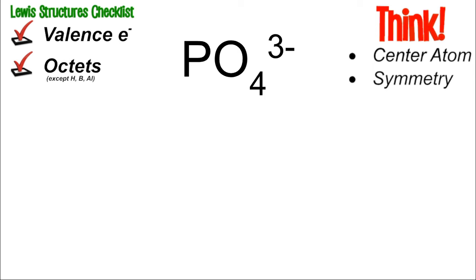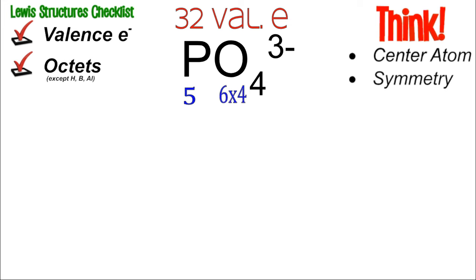Next, PO4 3-. Charges can give students anxiety, but all it is is adding or removing electrons from the total valence electrons. P is 5 and O is 6 with four of them, giving 32 valence electrons total. That's 5 from phosphorus, plus 6 times 4 from oxygen, plus 3 more electrons because the negative charge means we're adding electrons, not removing them.